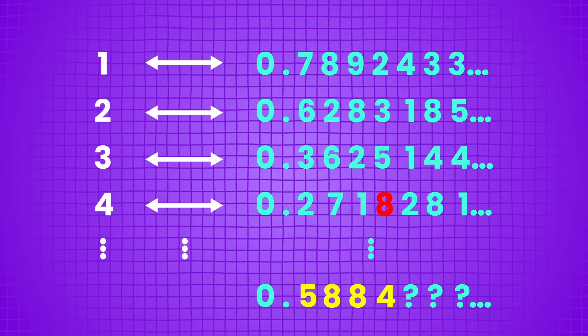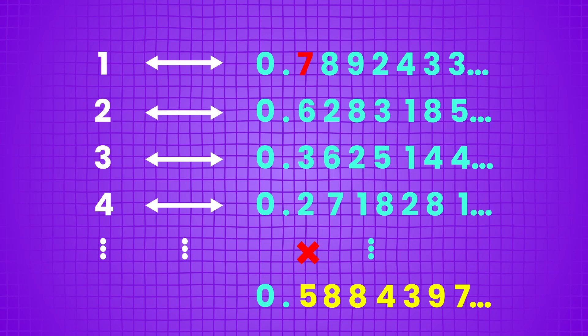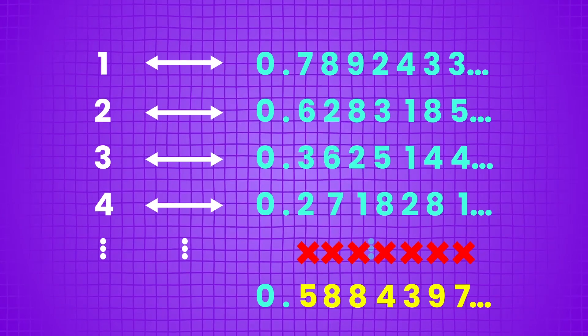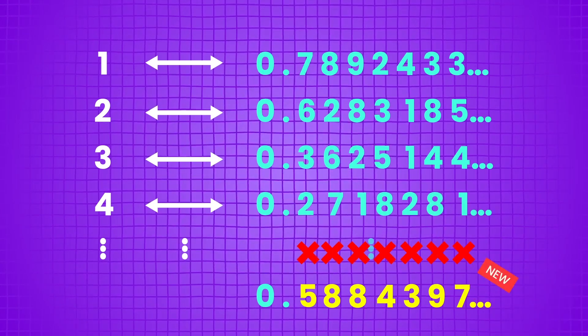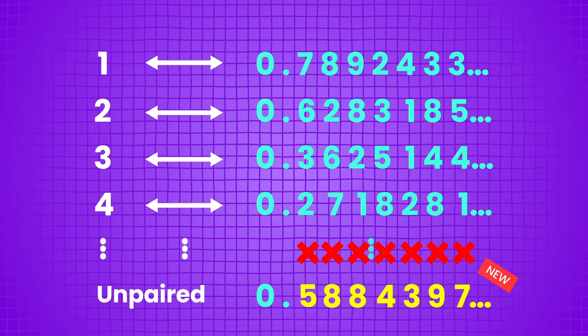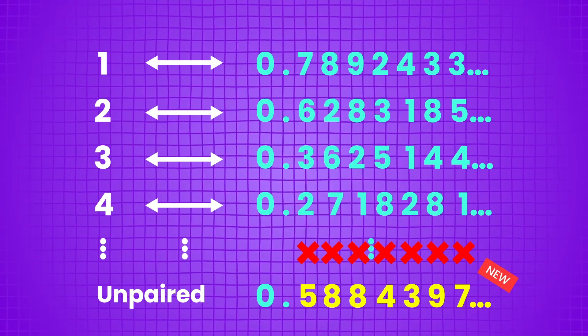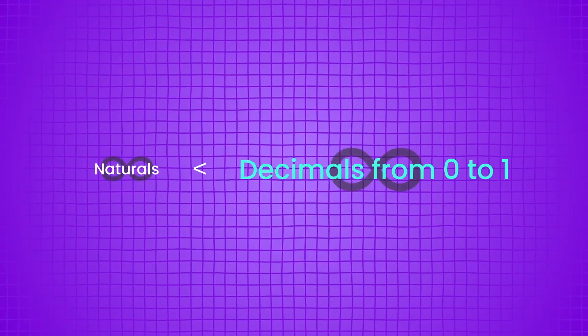If you keep on doing this, you'll have a new decimal that disagrees with the first decimal in the first place, second in the second place, and so on. It disagrees with all the numbers on your list in at least one place, so it can't be on your list. That means it's unpaired, so the infinity of decimals between 0 and 1 is greater than the infinity of all the naturals.